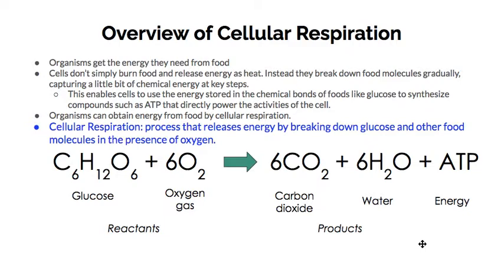After that quick review, if you forgot a lot of that information, it's perfectly fine to go back and re-watch the 1.12 lesson video. But now we're going to move on to cellular respiration. Organisms get the energy they need from food, and cells don't simply burn food and release energy as heat — instead they break down food molecules gradually, capturing little bits of energy at key steps. This enables cells to use the energy stored in the chemical bonds of food like glucose to synthesize compounds such as ATP that directly power the activities of the cell. Cellular respiration is the process that releases energy by breaking down glucose and other food molecules in the presence of oxygen.